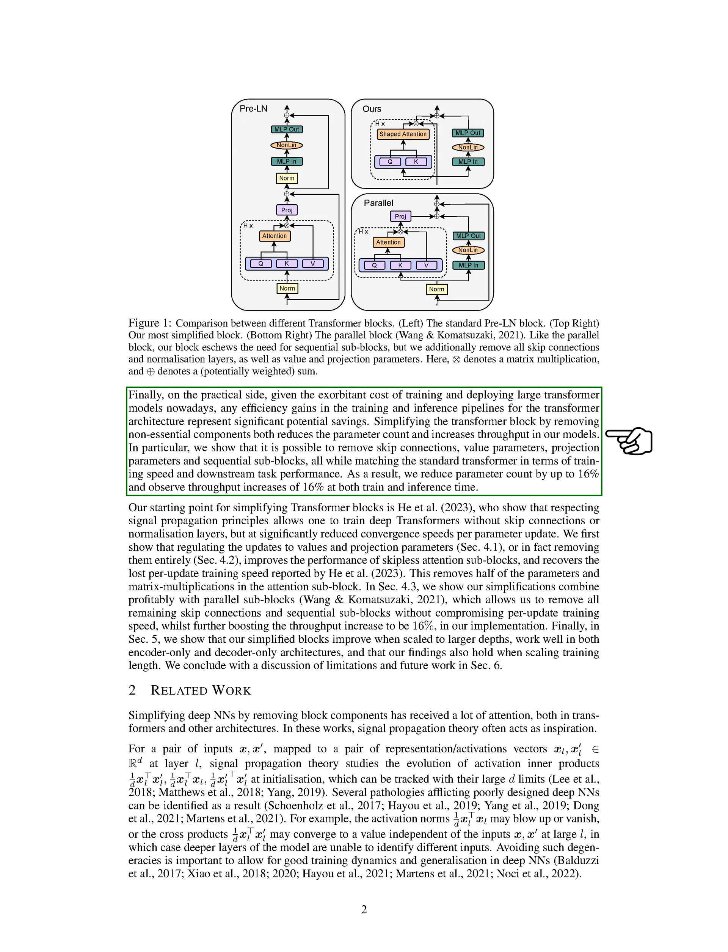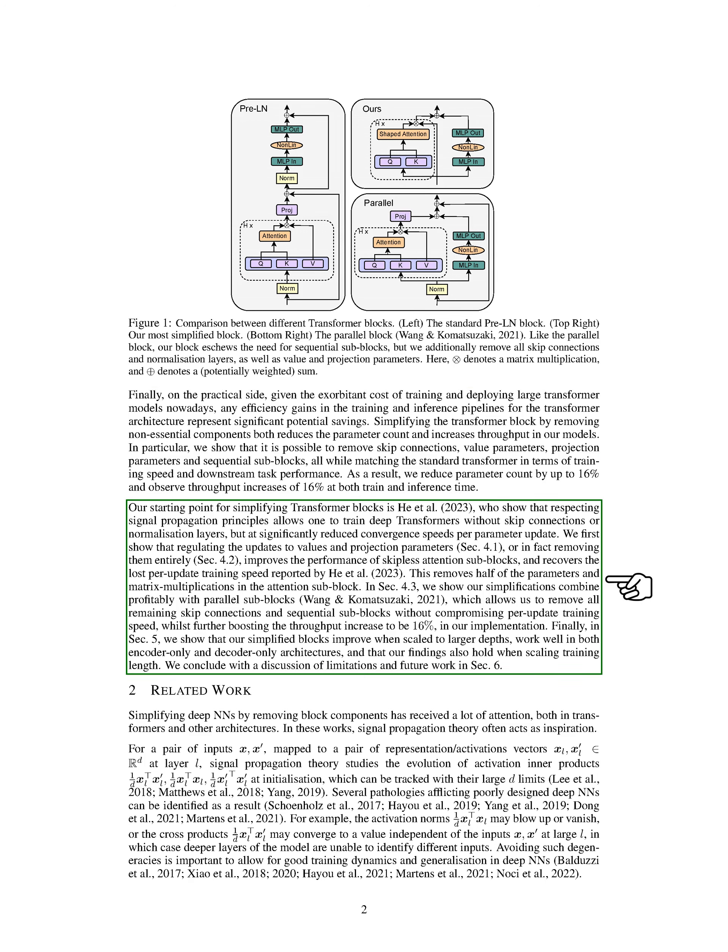Our starting point for simplifying transformer blocks is a study that shows that respecting signal propagation principles allows one to train deep transformers without skip connections or normalization layers, but at significantly reduced convergence speeds per parameter update. We first show that regulating the updates to values and projection parameters, or in fact removing them entirely, improves the performance of skipless attention sub-blocks and recovers the lost per-update training speed. This removes half of the parameters and matrix multiplications in the attention sub-block.